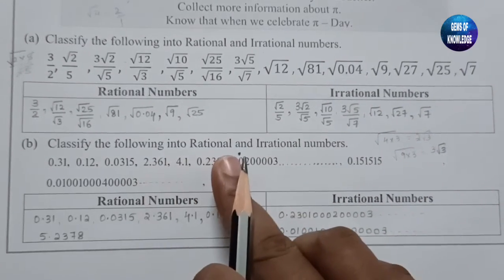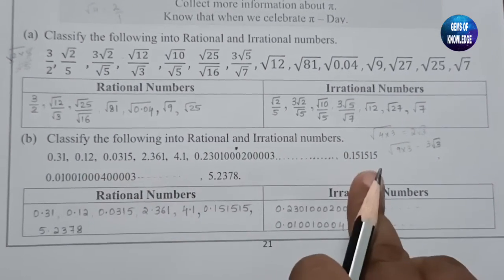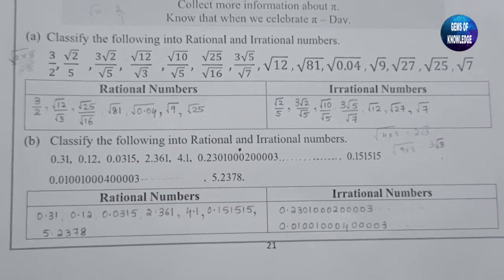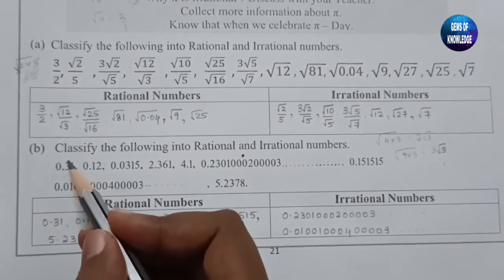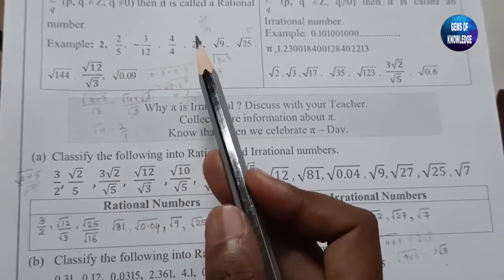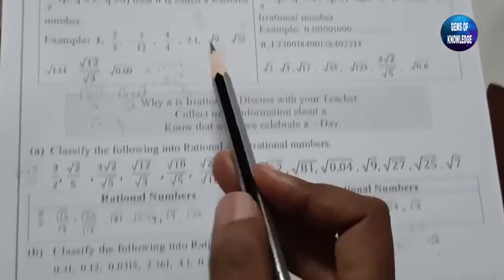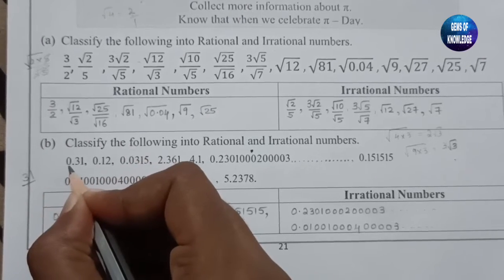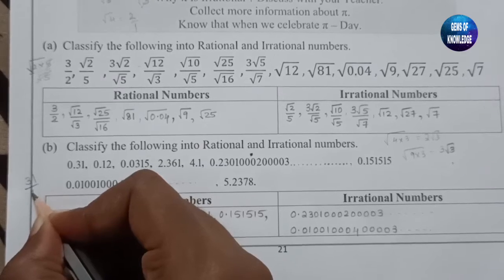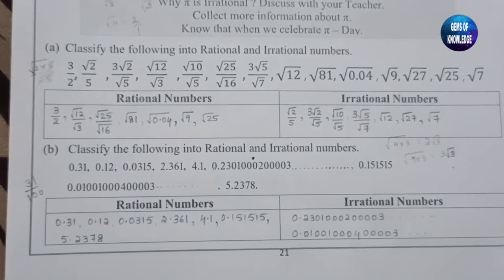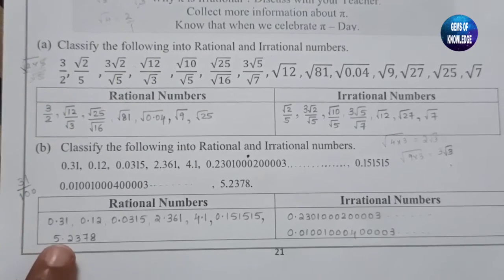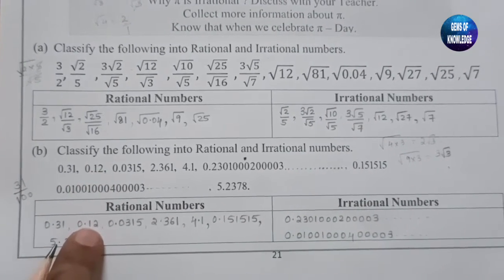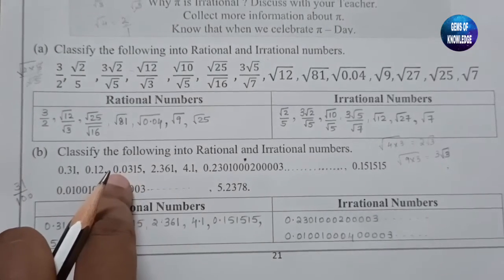The next question asks to classify numbers given in decimal form as rational or irrational. As shown earlier, 2.1 equals 21 divided by 10. Similarly, 0.31 can be written as 31 divided by 100 — two digits after the decimal means two zeros — so dividing 31 by 100 gives 0.31, which is rational. Similarly, 12 divided by 100 is also rational.